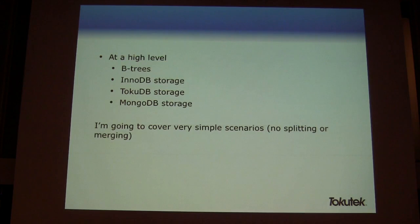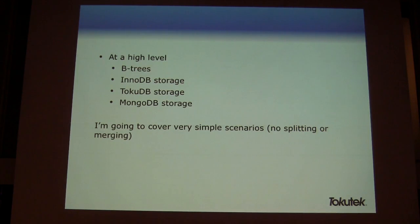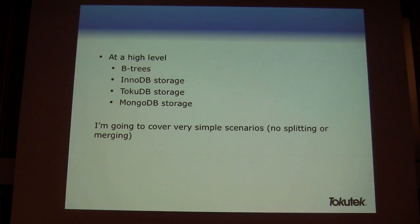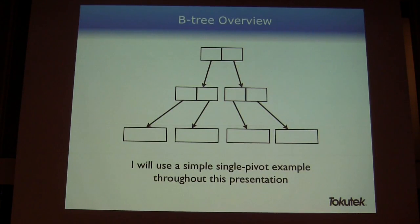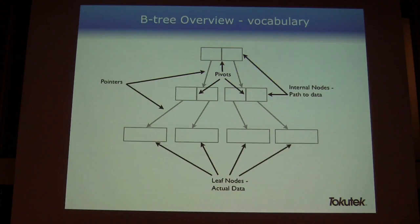So let's talk some theory. At a very high level, I want to discuss what a basic B-tree is as a data structure and how it applies to indexing. Then we'll look at how B-trees are used by InnoDB, a MySQL storage engine, and how we've applied fractal trees to our TokuDB storage engine for MySQL. We'll also discuss MongoDB storage and how we're applying fractal tree indexes there. We'll build simple B-trees without getting into splits and merges.